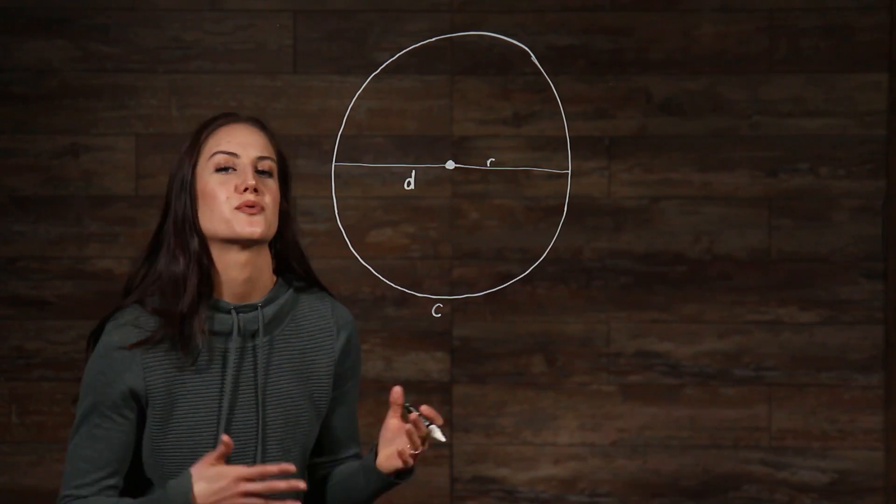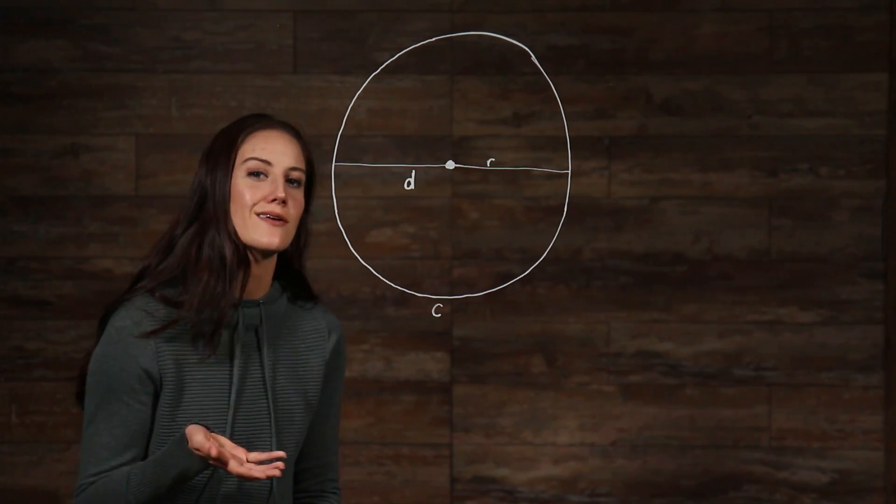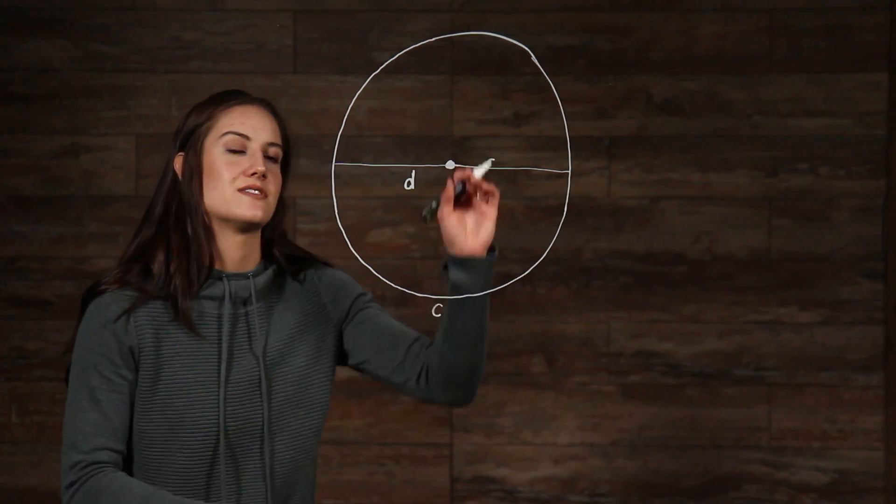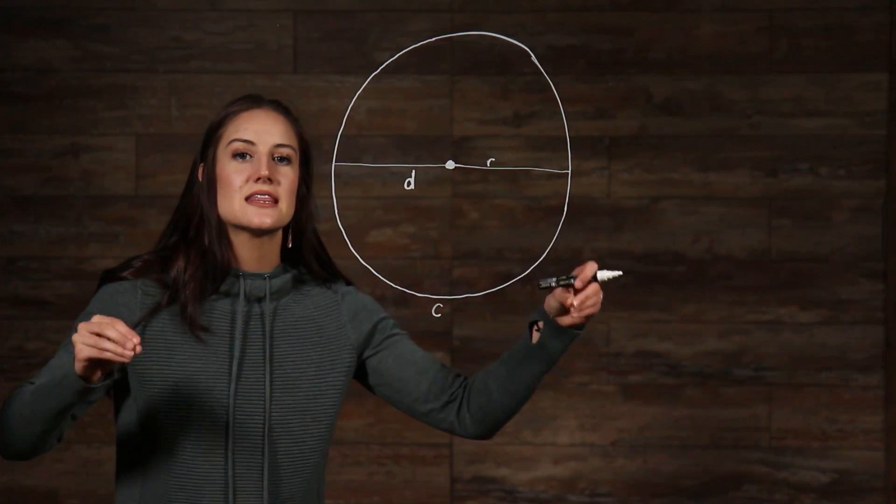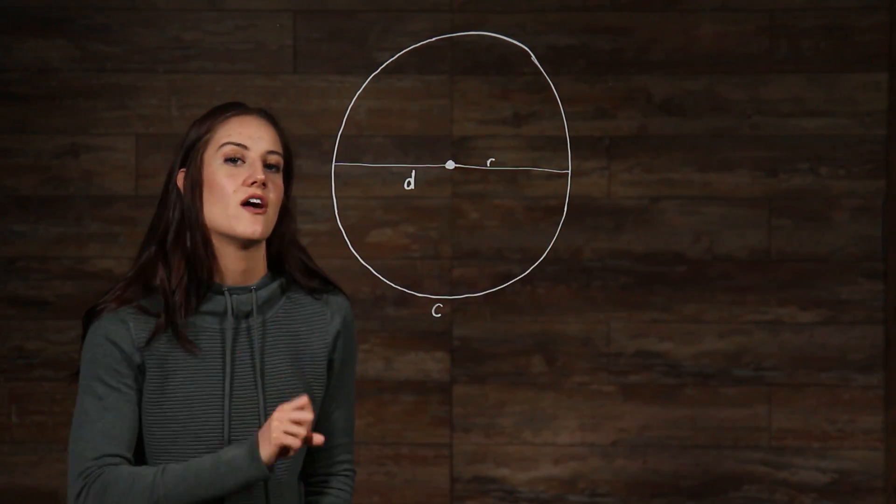Circumference is comparable to the perimeter of a shape, like a parallelogram. If you were to cut the line of this circle out and then lay it out as if it were a string, the length of that would be equivalent to its circumference.